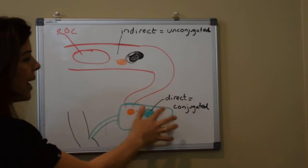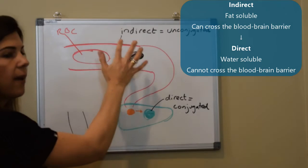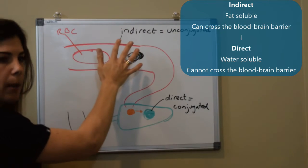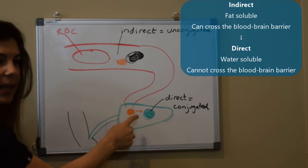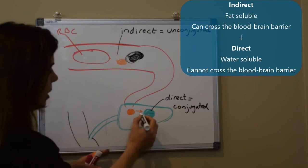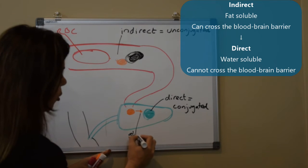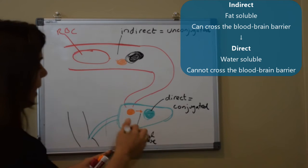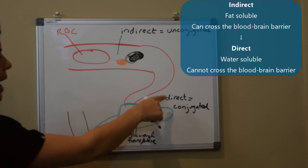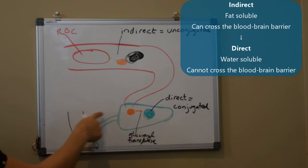I just want you to understand that there are two main types of bilirubin: indirect fat soluble crosses the blood brain barrier, that gets conjugated in the liver by an enzyme which is called glucuronyl transferase. That gets conjugated in the liver and then the liver is responsible for getting rid of that direct bilirubin.